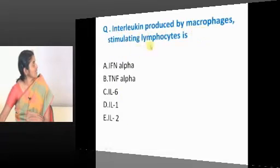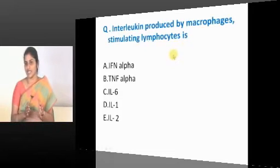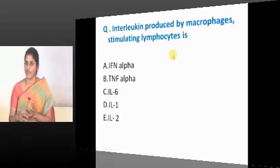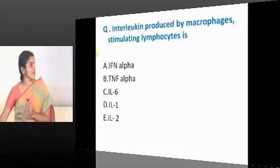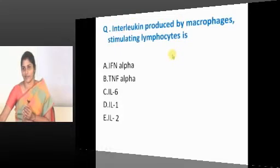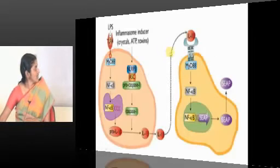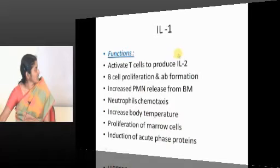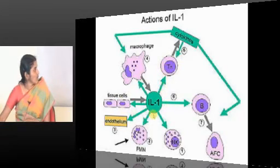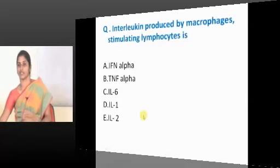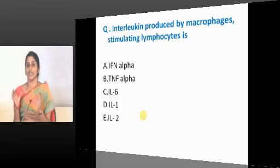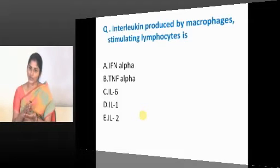The interleukin produced by macrophages stimulating lymphocytes relates to signal 3 of the immune response — the secretion of cytokines by the antigen-presenting cell activating T lymphocytes. The first cytokine produced by macrophages for T lymphocyte activation is IL-1. IL-1 is gaining popularity because of a new class of diseases: inflammasome-associated diseases, where activation of the inflammasome causes continuous IL-1 release.